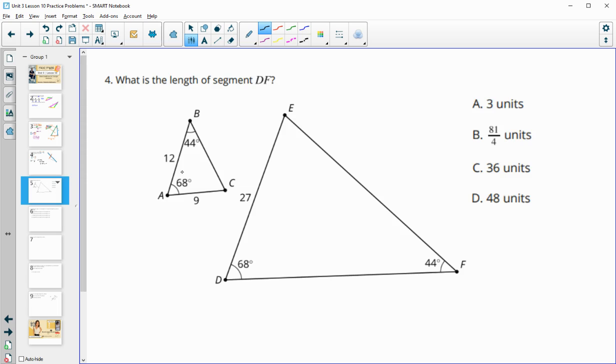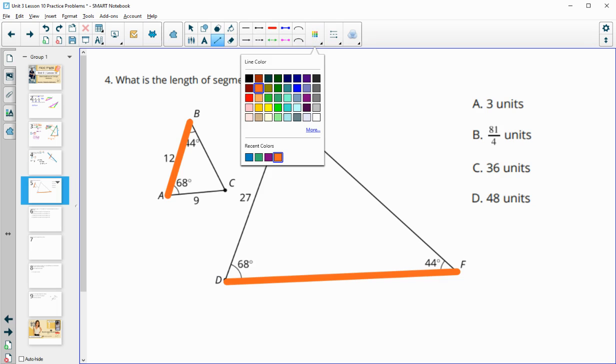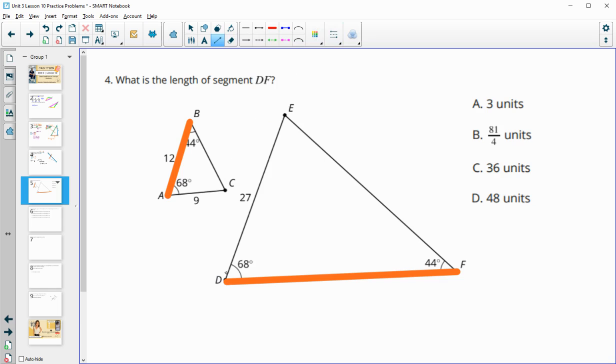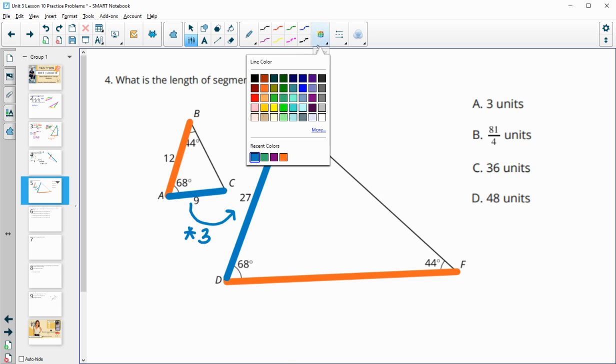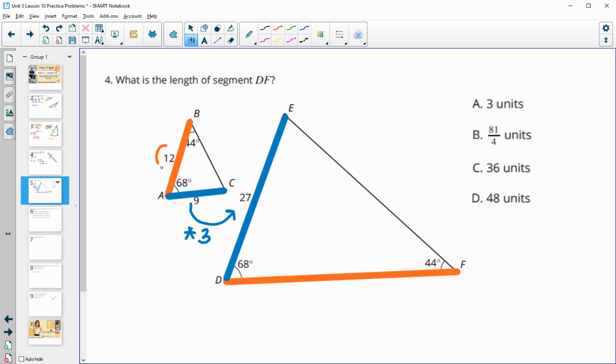Number 4, what is the length of DF? So we're looking for this side here, and it connects the 68-degree angle and the 44-degree angle. So if we look into this other triangle, that means it's going to go with this 12. So then let's find another set of corresponding sides to help us with the scale factor. So we see that we have this 27 in here, which is connected to the 68-degree angle. So connected to the 68-degree angle here is this 9. And then that's a pretty easy scale factor, since when we look at 9 to get to 27, that's just multiplied by 3. So that's going to happen here as well. When we go to find this missing orange segment, we're going to take this 12 and just multiply it by the same scale factor or dilation. So we're going to do 12 times 3, which will give us 36.